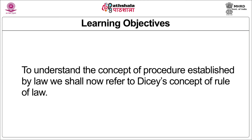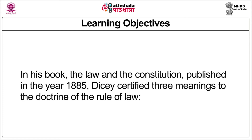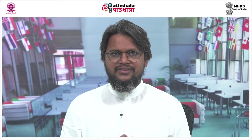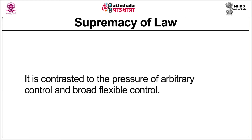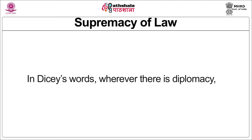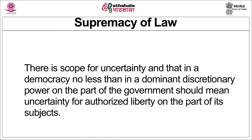To understand the concept of procedure established by law, we shall now refer to Dicey's concept of rule of law. In his book 'Law and the Constitution' published in 1885, Dicey ascribes three meanings to the doctrine of the rule of law. The first element he identifies is supremacy of law. The term supremacy of law implies governance and the primacy of law. It is contrasted to the pressure of arbitrary control and broad flexible control. In Dicey's words, wherever there is discretion, there is scope for uncertainty, and that in a democracy, no less than in any other system, discretionary power on the part of the government should mean uncertainty for legal liberty on the part of its subjects.